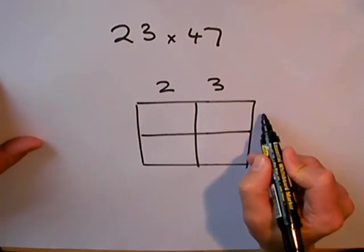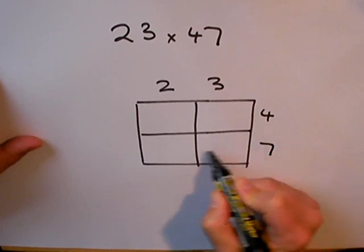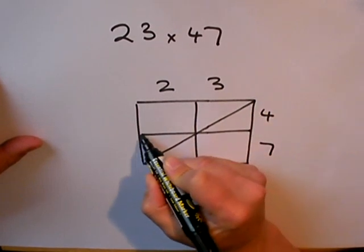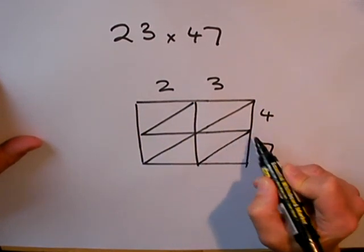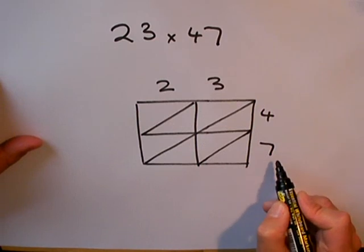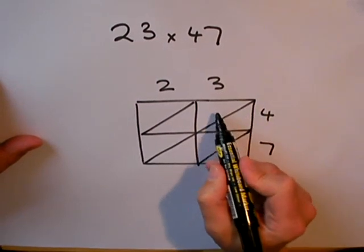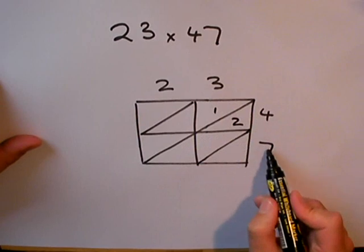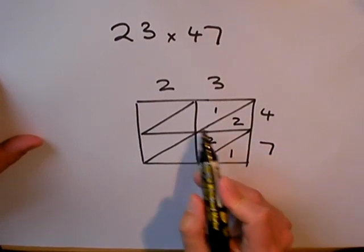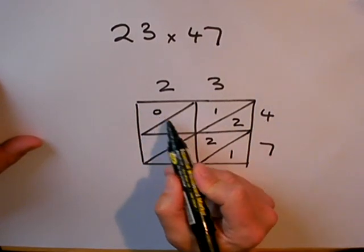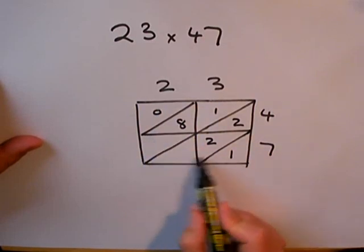23 multiplied by 47. I need to put my diagonals in because I'm going to use those for adding up later. Now, let's fill in the grid. Three fours are 12. Three sevens are 21. Two fours are 8. And two sevens are 14.